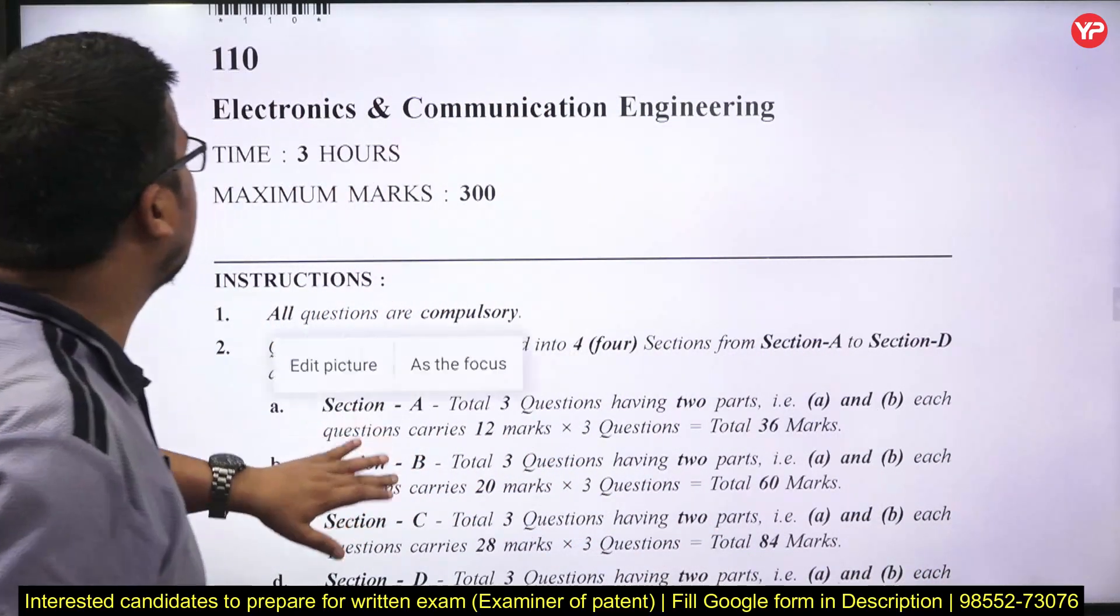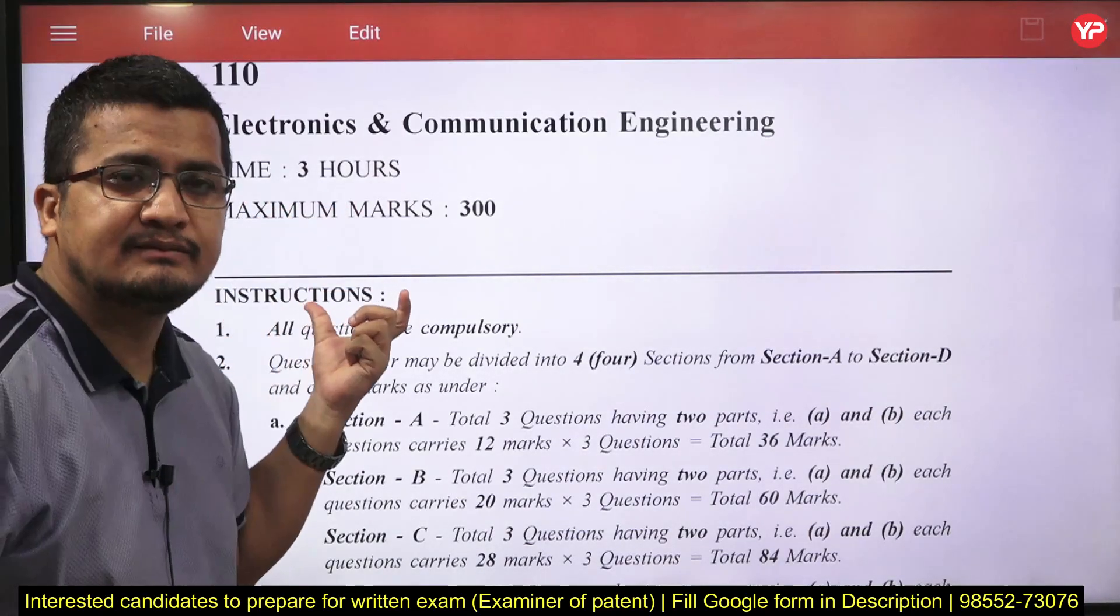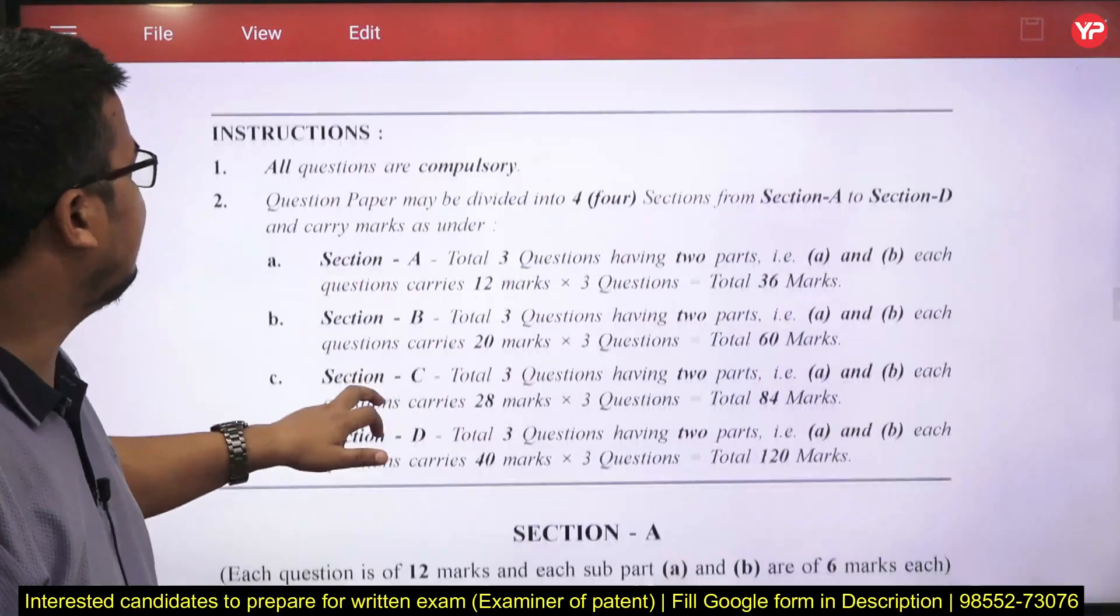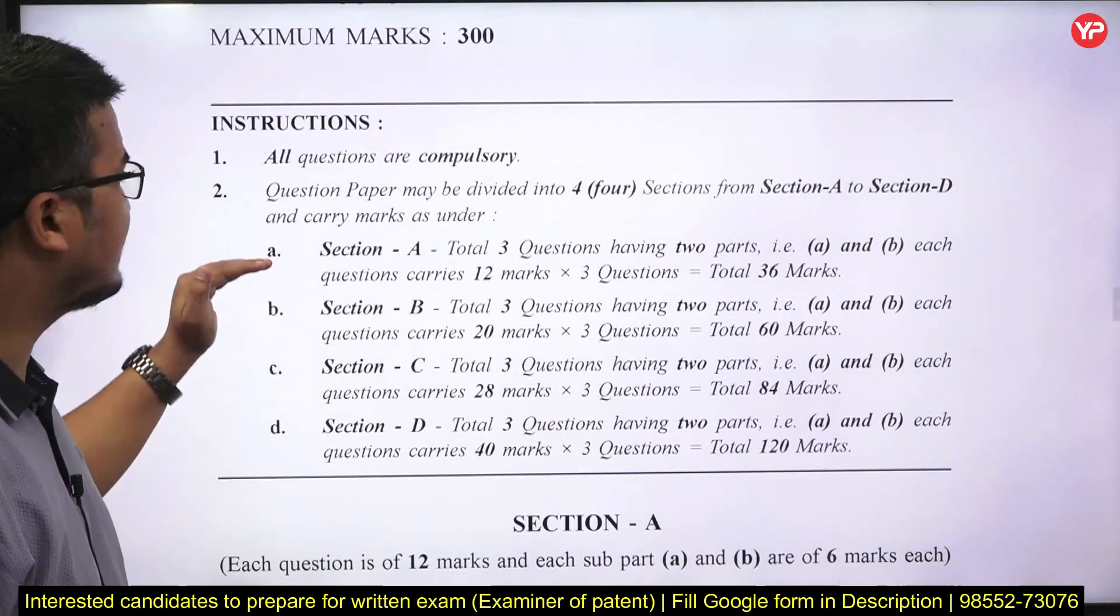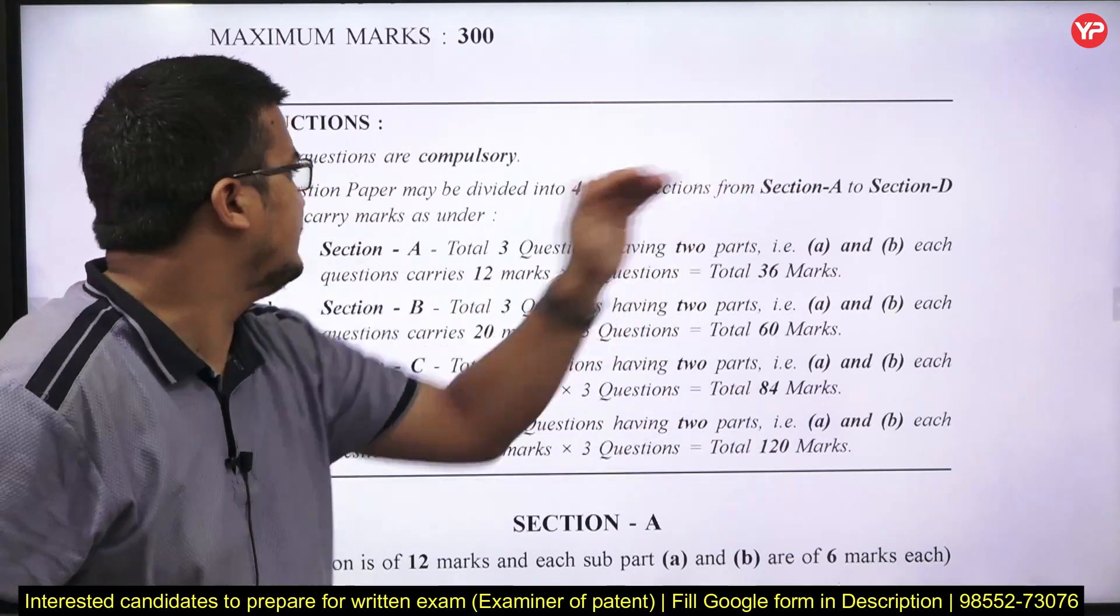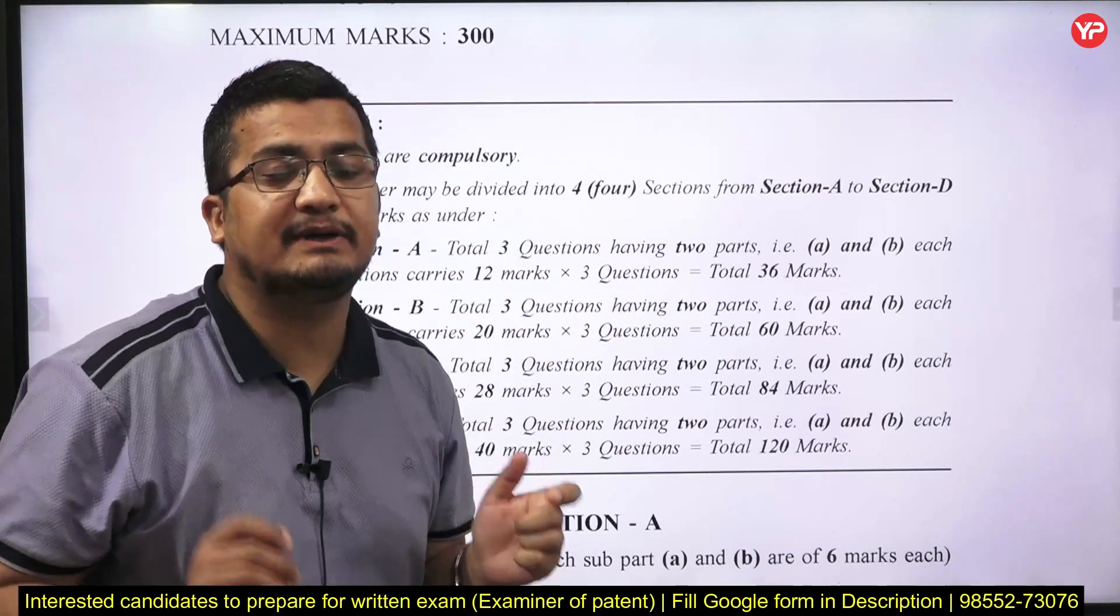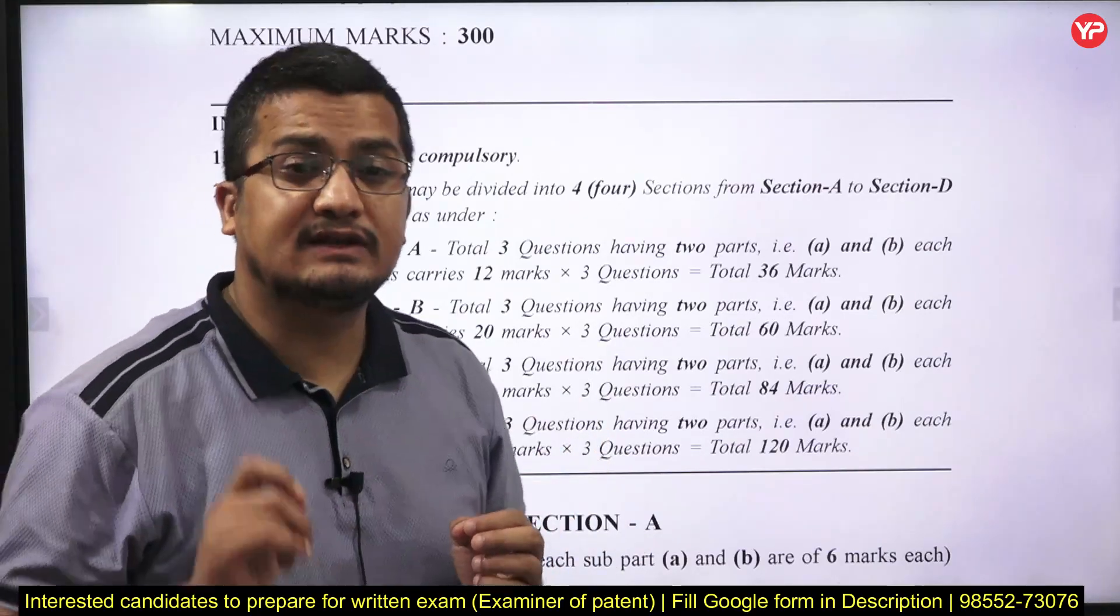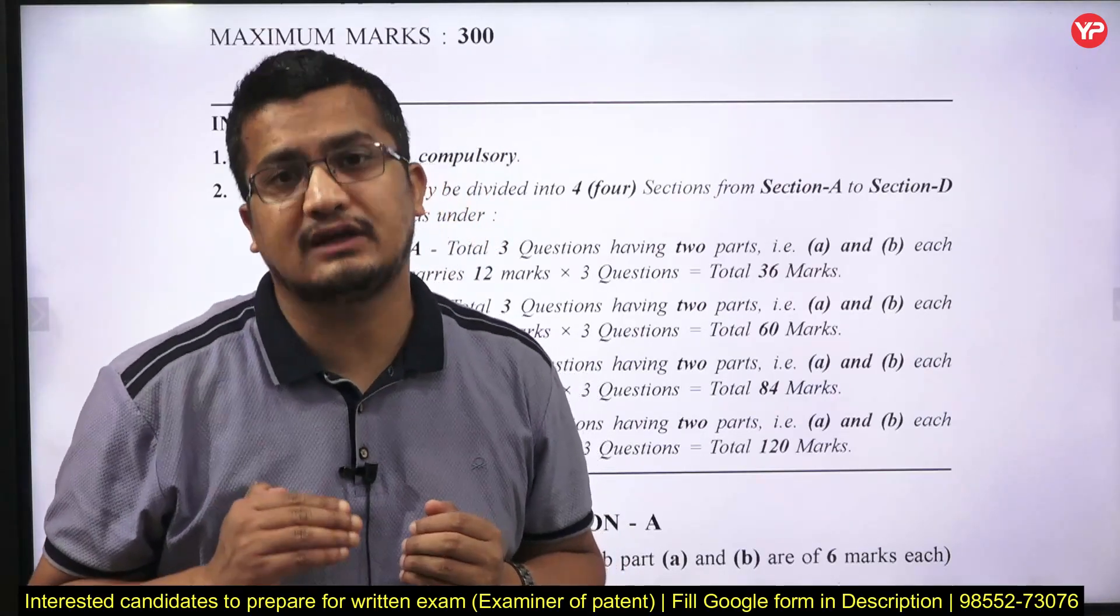As you can see I have got one previous year paper that is for electronics and communication. Duration is 3 hours and total marks is 300. They have clearly mentioned all questions are compulsory and there are four sections. Question paper may be divided into four sections, section A to D and carry marks as mentioned. This is as per the last time this exam was conducted, what was the then conventional or descriptive paper structure for the technical that we are taking as a reference.